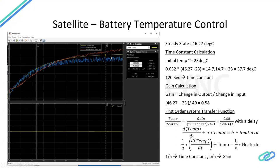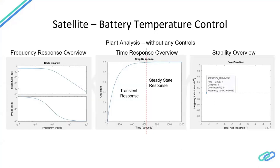So far this is open loop — you give 40% input, the system does what it does, and you gather data. Now we want to regulate to, say, 35°C or 40°C. How do we design the PID gains? PID stands for Proportional-Integral-Derivative. We use some tools to design these gains. This leads into plant analysis — frequency response, time response, and stability analysis. All controls need to be stable: for example, if you give an actuator input and the temperature goes out of control, how do you bring that system back to a stable operating point?